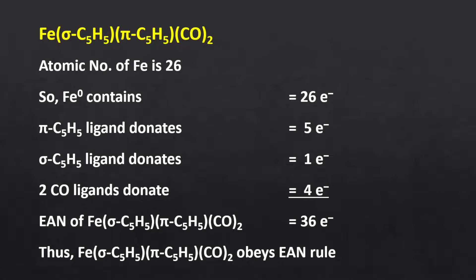In this complex, we have both 1 and 5 electron donor cyclopentadienyl ligands. The oxidation state of iron is 0, so 26 electrons from iron, 4 from 2 carbonyl ligands, 1 from sigma-cyclopentadienyl, and 5 from pi-cyclopentadienyl. Thus, overall 36 electrons, which makes this complex stable.